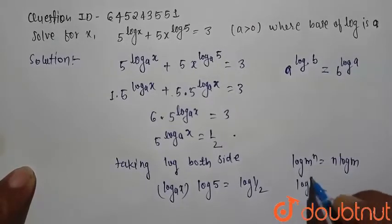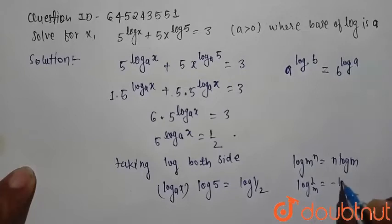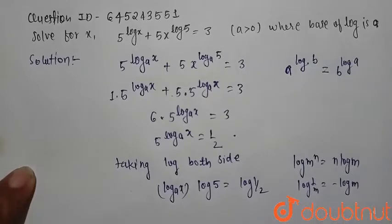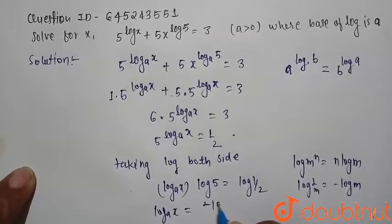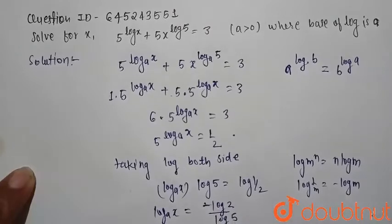Now log 1 by m can be written as minus log m. So we can write log a x equals minus log 2 divided by log 5.